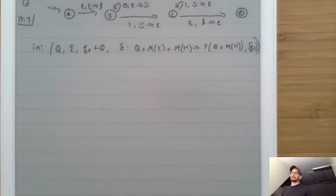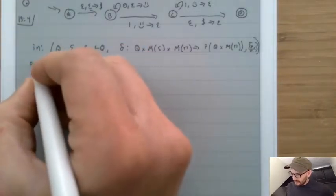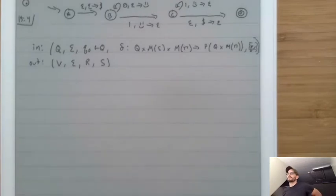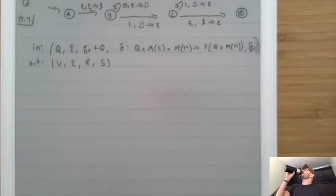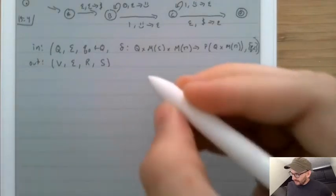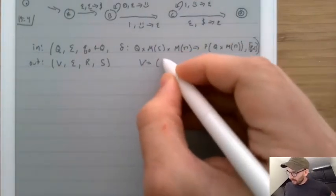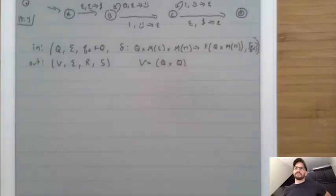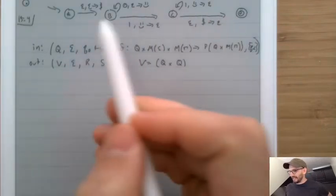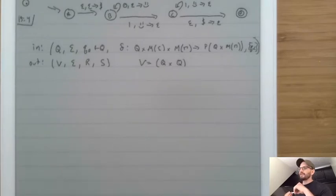The output is going to be a set of variables, a sigma, rules R, and a start variable S. I don't know how to explain this intuitively, so trust me and we'll work through it. The set of variables is going to be Q × Q — pairs of states. So we'll have AA, AB, AC, AD, et cetera.